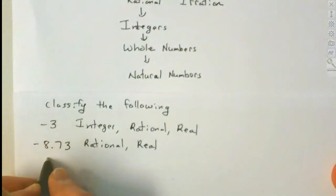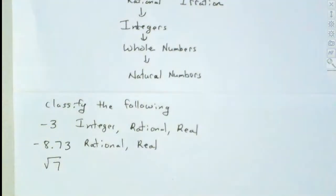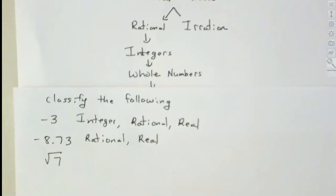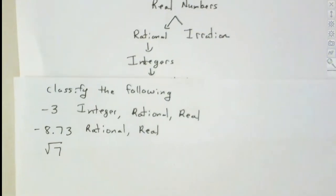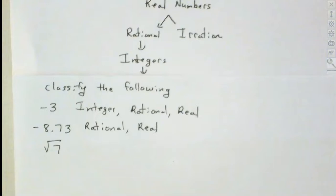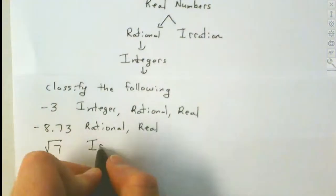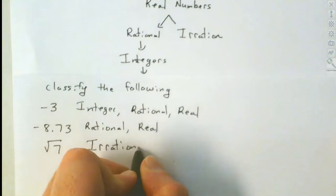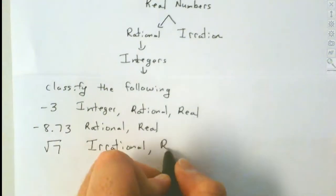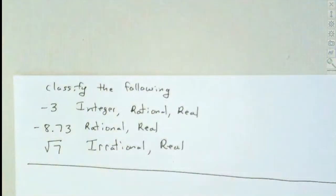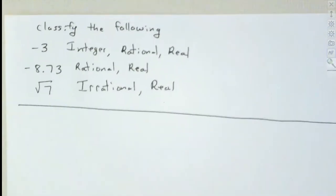How about the square root of 7? Is that rational or irrational? It's going to be irrational. Why? Because 7 is not a perfect square. So it's irrational, and everything is also real. So it's irrational and it is also real. That's how we classify numbers — based upon how they were discovered and how man started to use numbers.